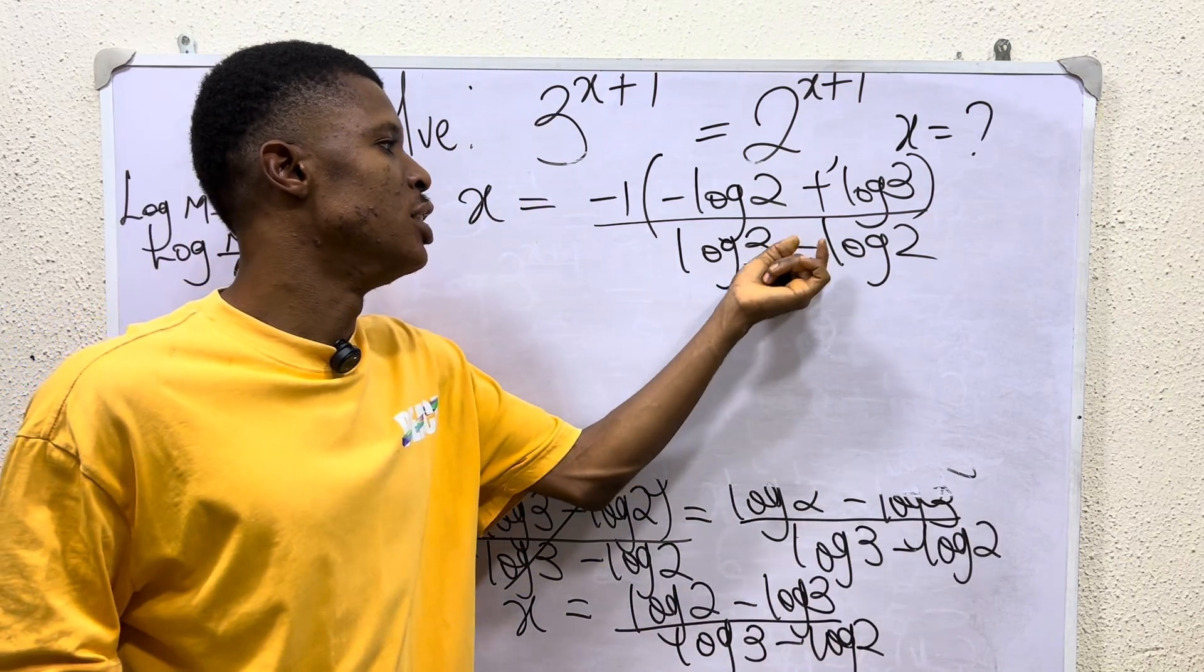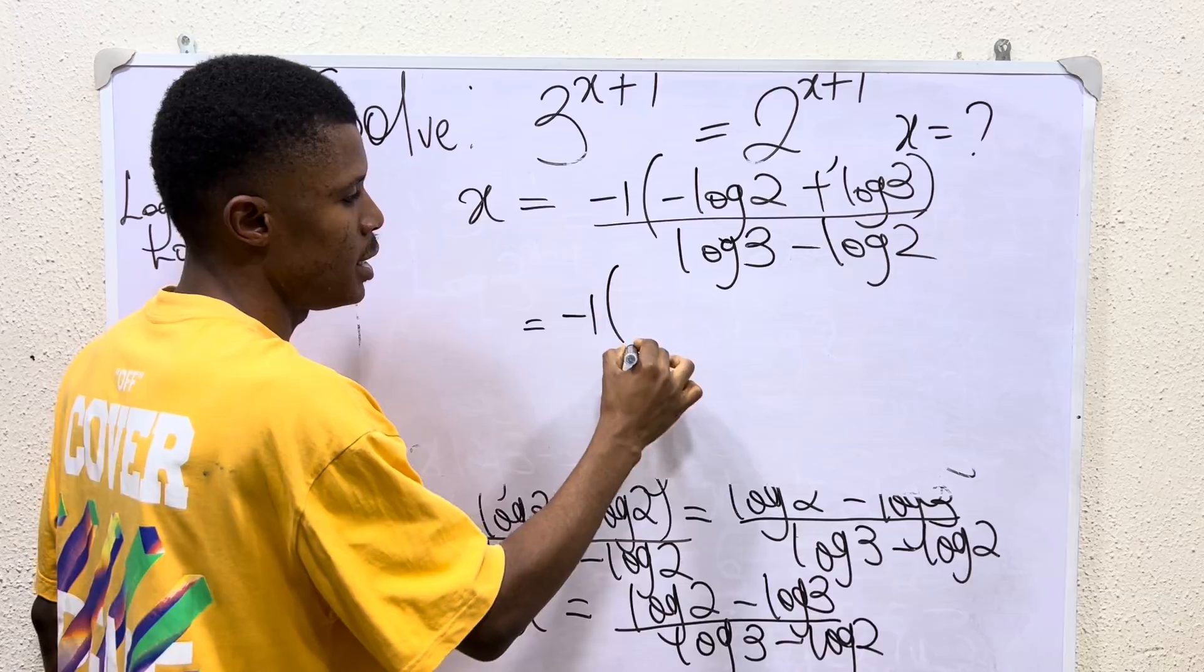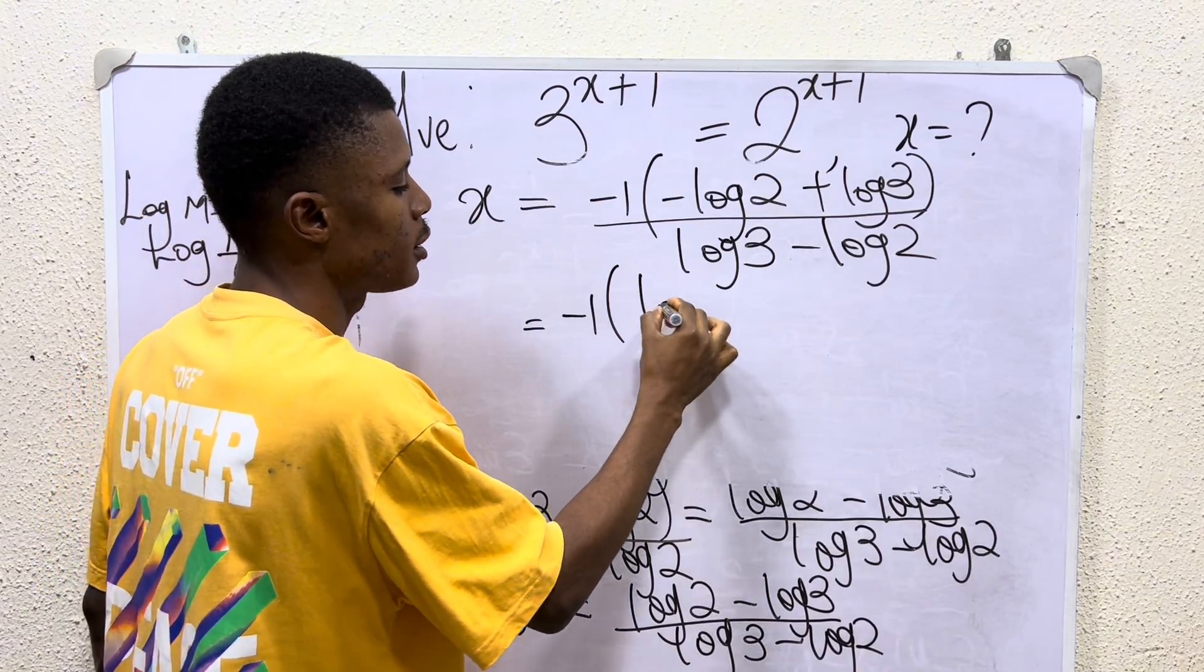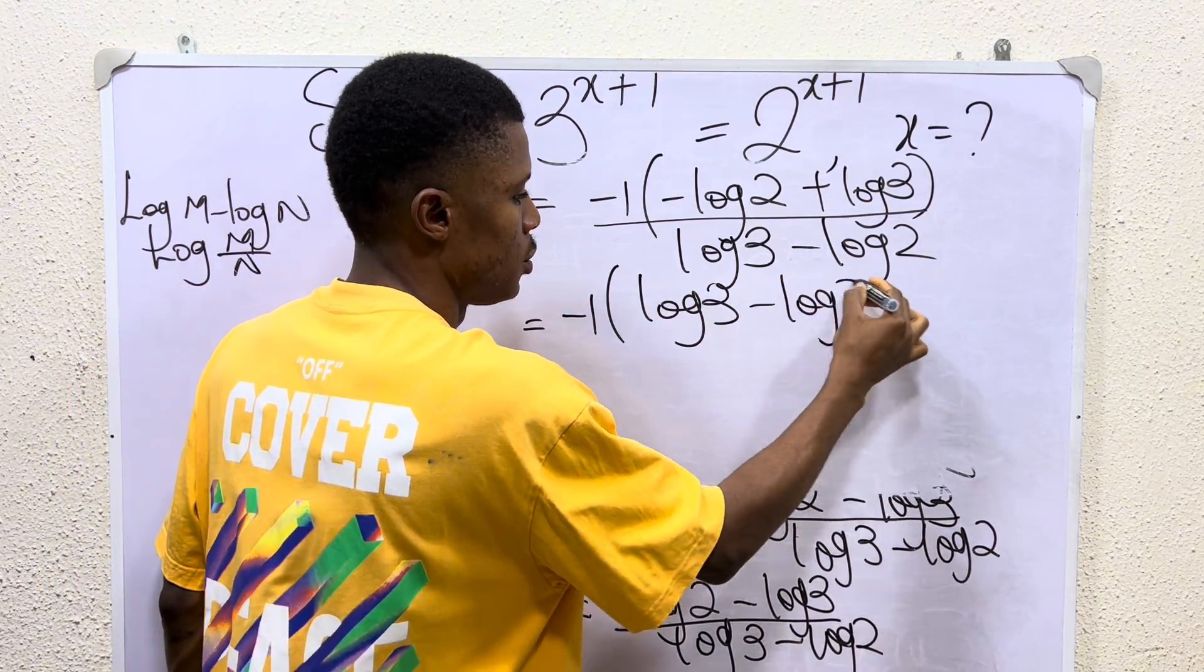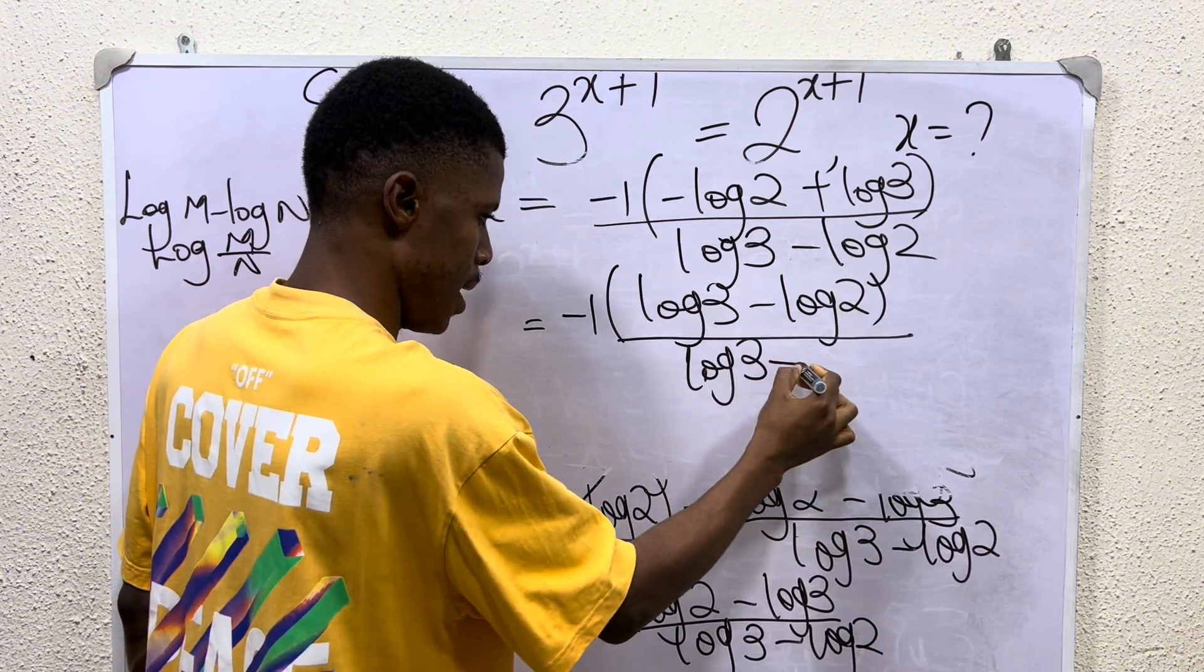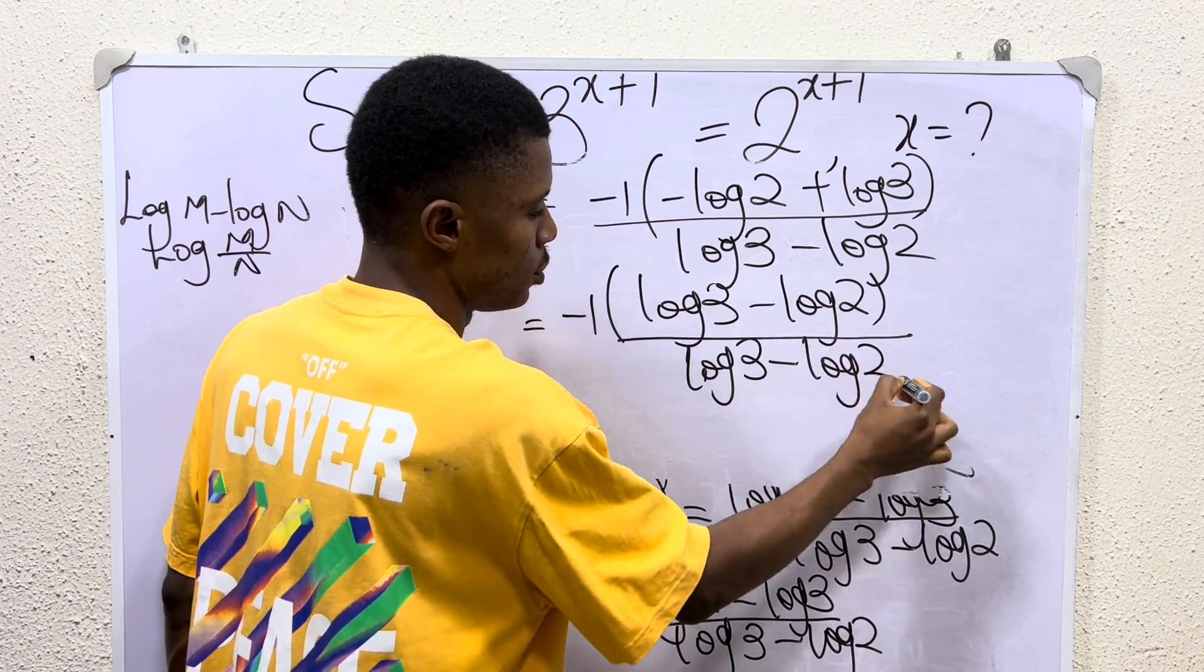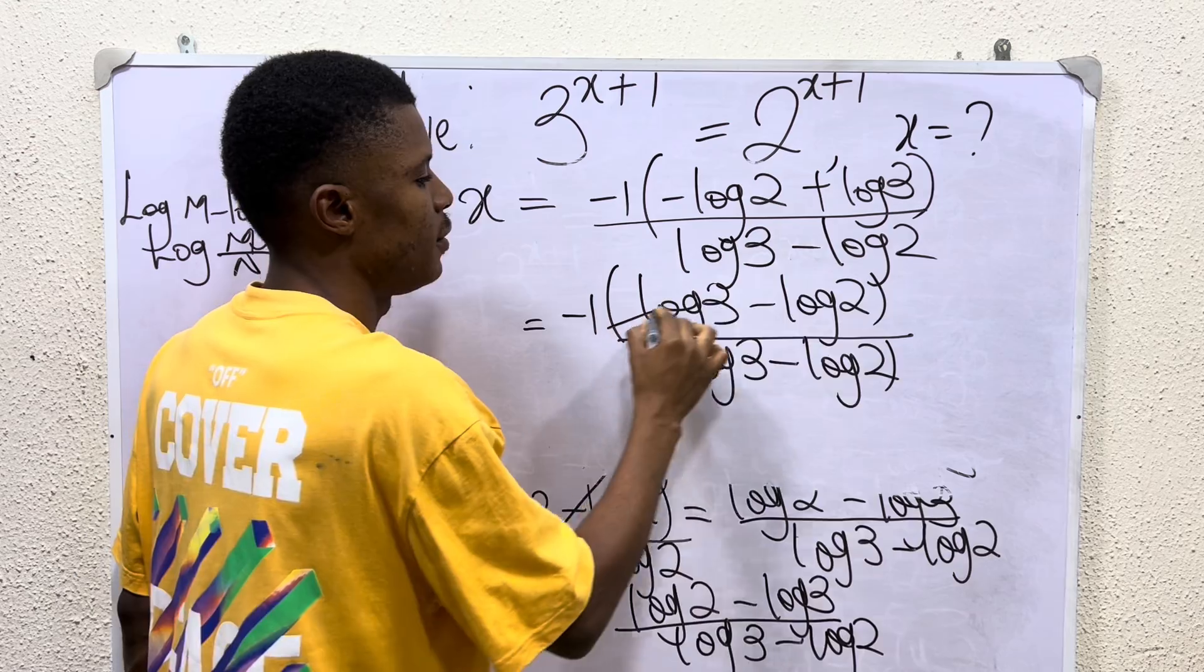So we can actually rearrange the numerator in the form that -1 into log 3 is positive, so it comes forward: minus log 2, then divided by log 3 minus log 2.